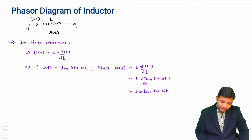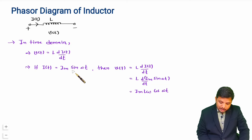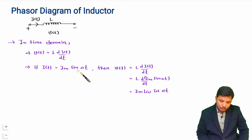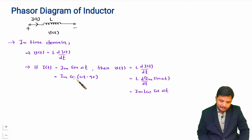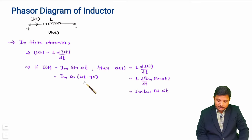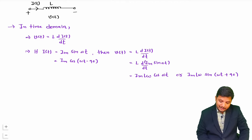To compare the phase between voltage and current, both expressions must be in the same form — either both in sine or both in cosine. Here voltage is in cosine and current is in sine. To convert sine to cosine you use sin(ωt) = cos(ωt − 90°), and to convert cosine to sine you use cos(ωt) = sin(ωt + 90°).